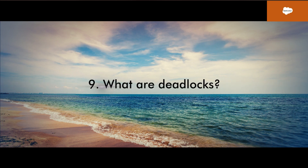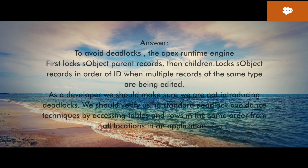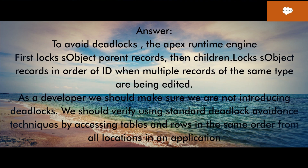Question 9: What are deadlocks? To avoid deadlocks, the Apex Runtime Engine first locks sObject parent records, then children, and locks sObject records in order of ID when multiple records of the same type are being edited. As a developer, we should make sure we are not introducing deadlocks, and should verify using standard deadlock avoidance techniques by accessing tables and rows in the same order from all locations in an application.